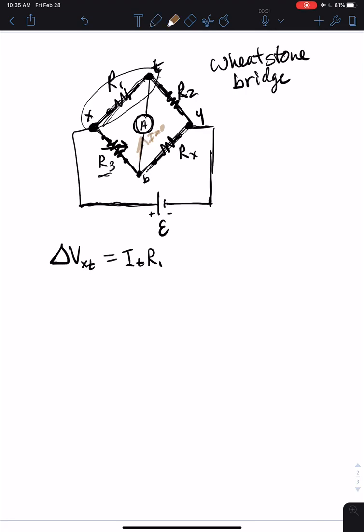By the way, the current flowing through here, if we come all the way around, this is Itop. And R1 and R2 are in series, especially if there's no current flowing through the ammeter. R1 and R2 are in series, so the current's constant. And the same would be true down here. The current's flowing that way. We'll call that Ibottom.